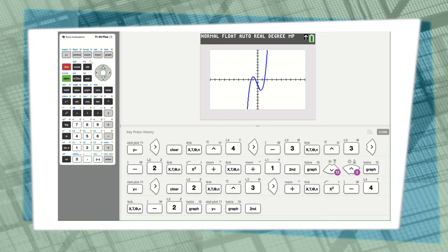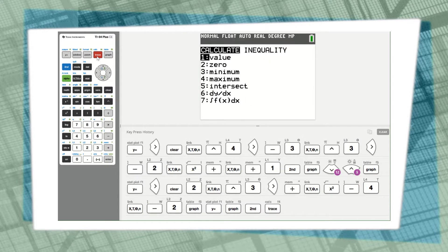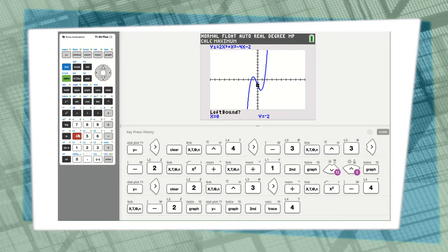I'm going to go to second trace calc. The one on the left was a maxima, so I'm going to choose option 4 first, and I'm going to move this cursor.